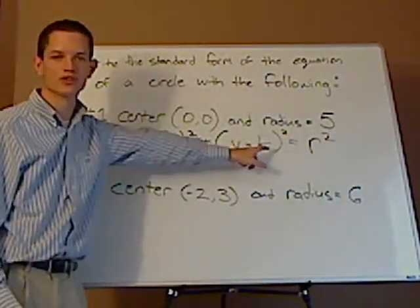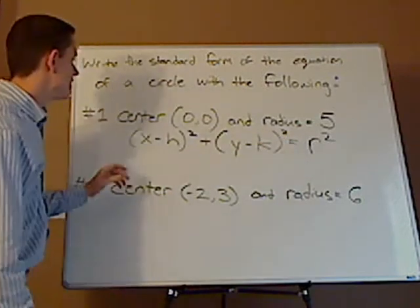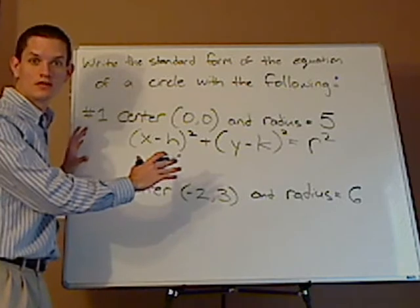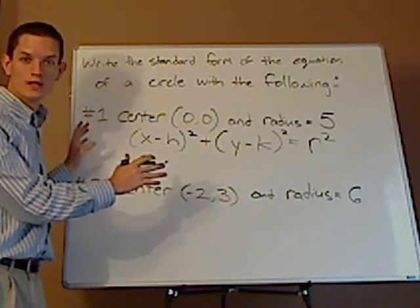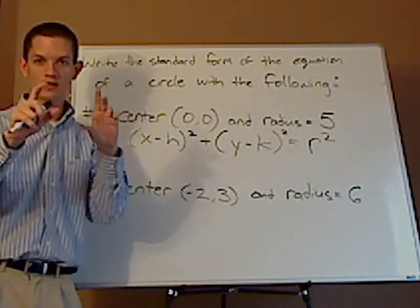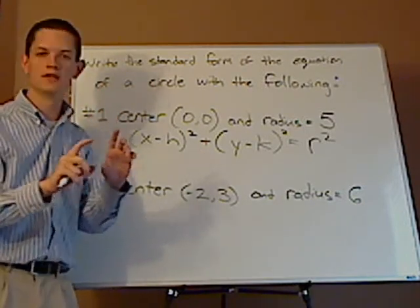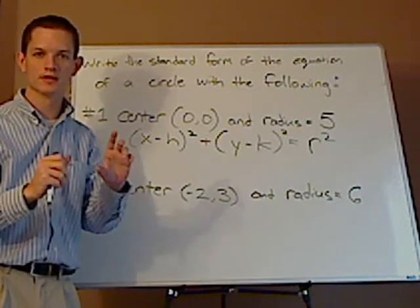(h, k) is your center, and r is your radius. Now, if this looks somewhat familiar, it should be. You can actually take the distance formula to derive the equation of a circle. I'm not going to do that here, but perhaps in another video.